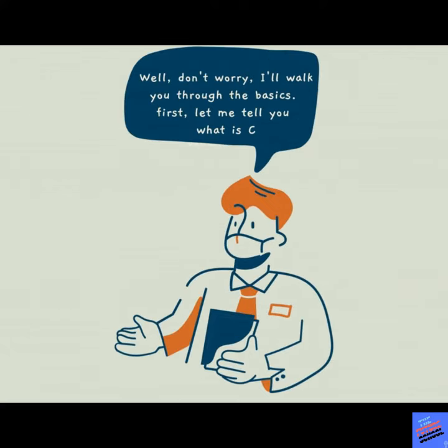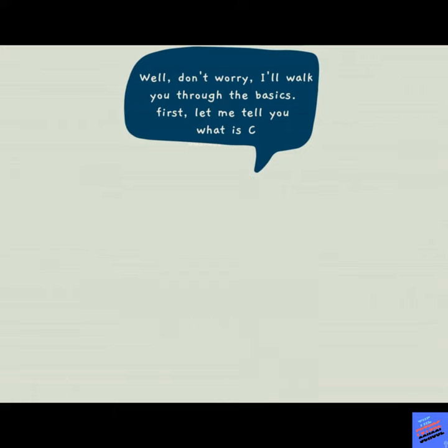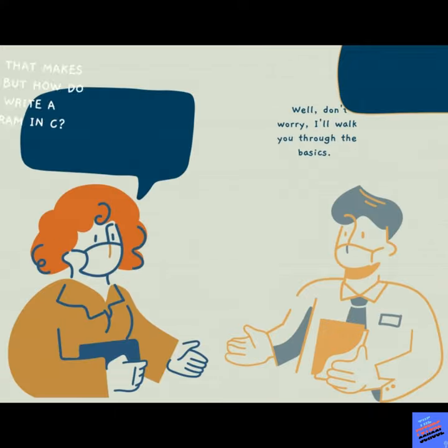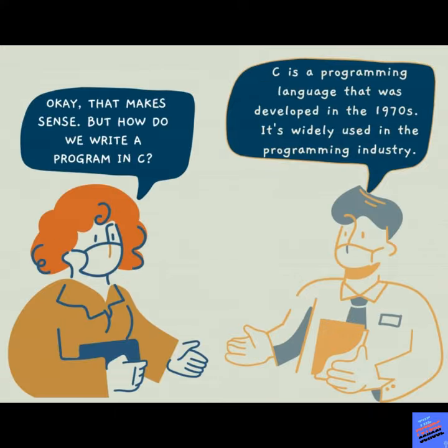First, let me tell you what C is. C is a programming language that was developed in the 1970s. It is widely used in the programming industry. Okay, that makes sense. But how do we write a program in C?